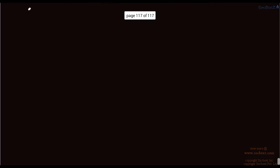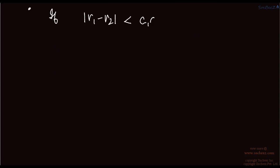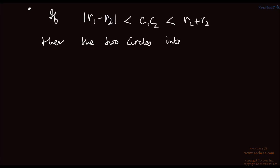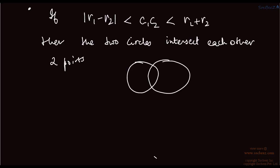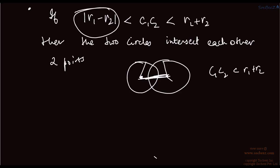The third condition: if r1 minus r2 is less than c1c2 which is less than r1 plus r2, then the two circles intersect each other at two points p and q. The distance c1c2 is less than the sum of the radii but greater than the difference of the radii, so they overlap at two distinct intersection points.